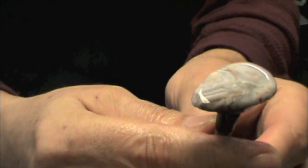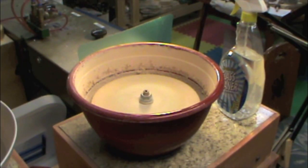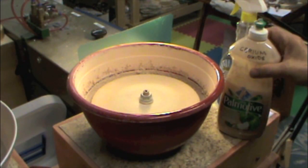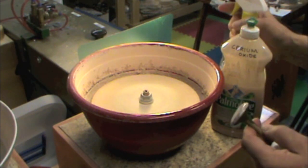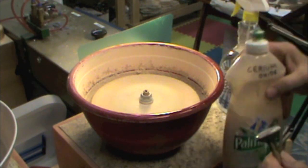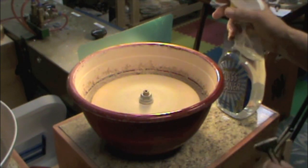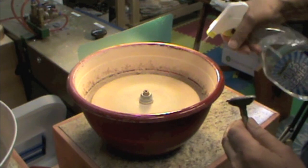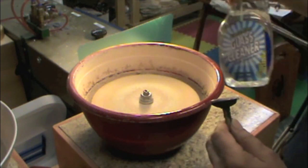And it is done up to the 14000 grit. And from this on, next step is polishing. I use Cerium Oxide for this stone. Now you could use Cerium Oxide or Tin Oxide depending on what kind of stone that you use. Because the majority of the stones will be polished with the Cerium Oxide.